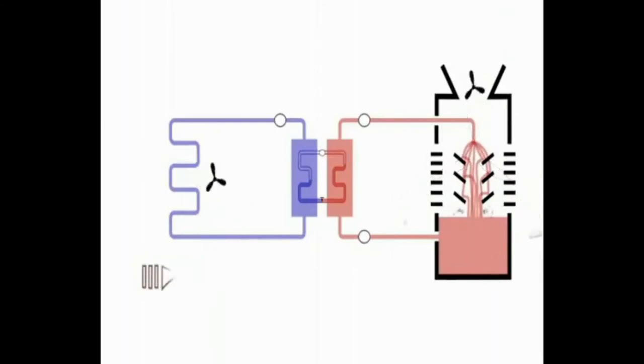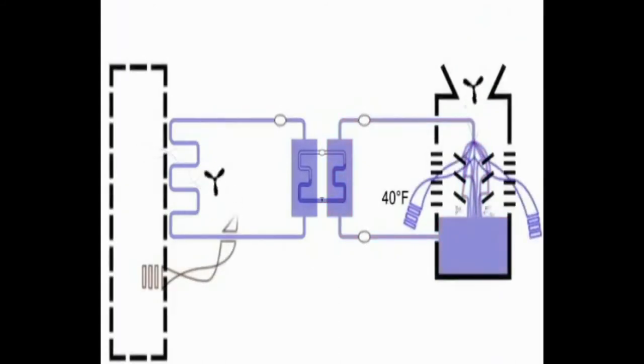In a water side economizer mode, cold air cools, and it really cools because it's winter, the water in the cooling tower. That cold water moves to the condenser side of the chiller and cools the coolant.